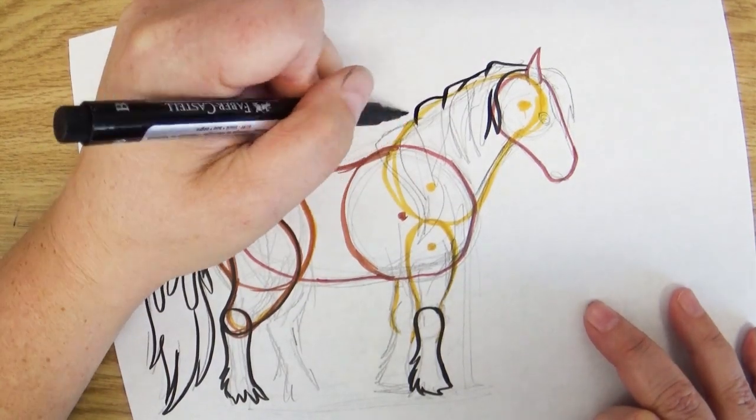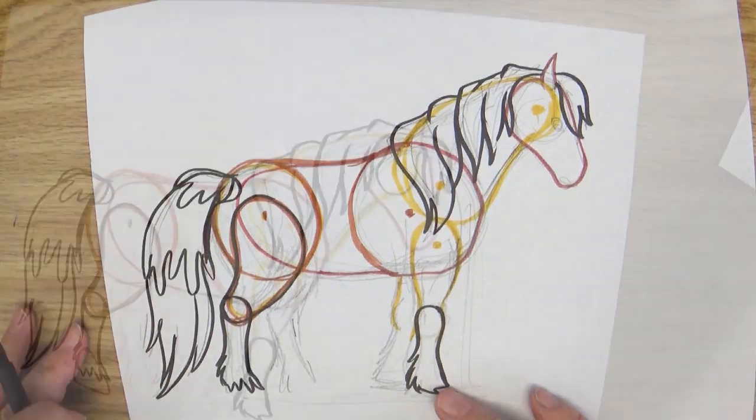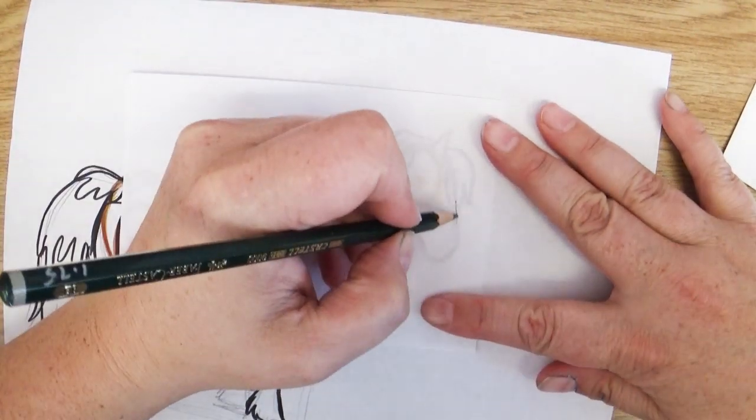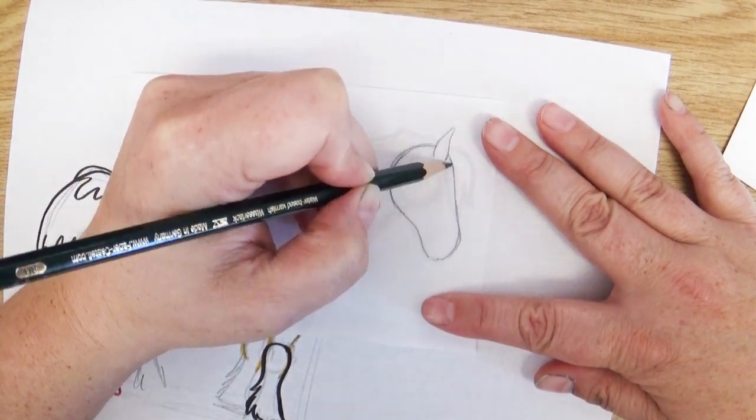Once I had the drawing completed, I kind of blocked out where things would be cut into different pieces, and then took a really thin piece of paper, laid it over top of it, and began to trace out each individual piece.